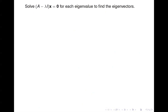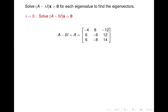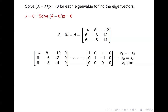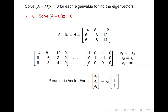Then we find the eigenvectors. For lambda equals 0, we solve A minus 0 times the identity times x equals 0 — so A minus lambda I is just A. We set up the homogeneous system and get that matrix into reduced echelon form. Writing the solution in parametric vector form, any multiple of (-1, 1, 1) would be an eigenvector associated with lambda equals 0.